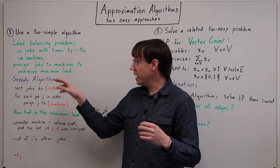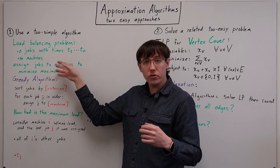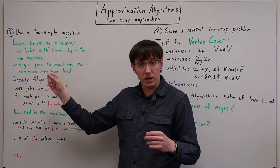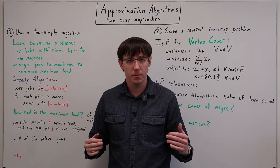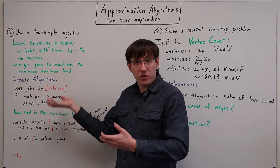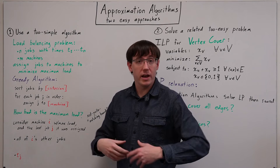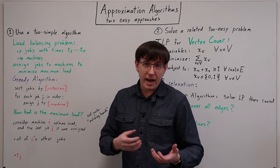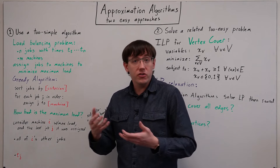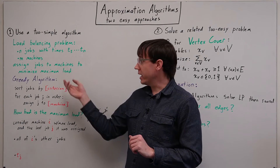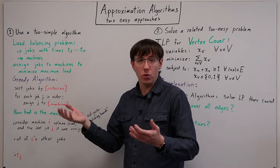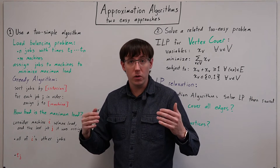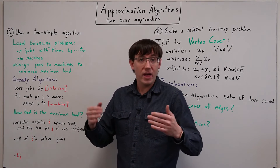meaning that we want to make the worst-case load on any given machine as small as possible. This load balancing problem is an optimization problem, but as usual, there is a natural decision problem variant where we give some threshold and we're asking, can the maximum load be below that threshold?